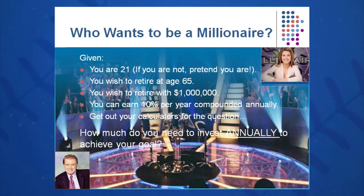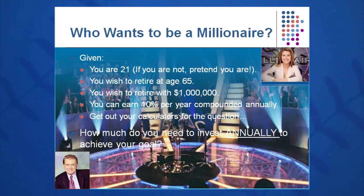The future value annuity is $1,000,000. C is the constant amount I need to invest each year, times (1 + 0.1) to the 44th power, minus one, all over 0.1. I can see that I need to invest something on the order of $1,500 per year — a little more than $125 to $130 per month — which is very, very doable to reach that $1,000,000 goal.